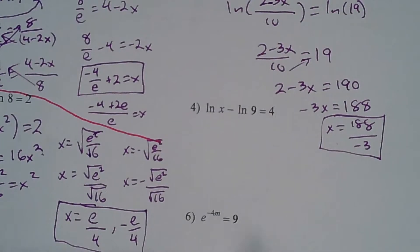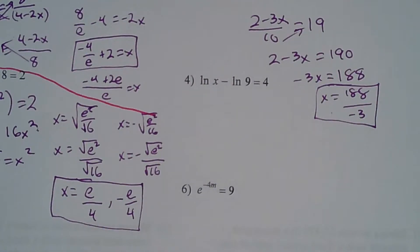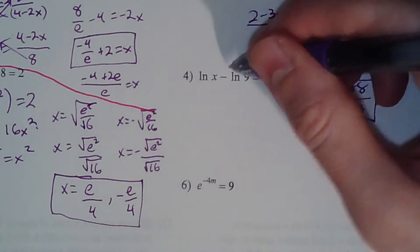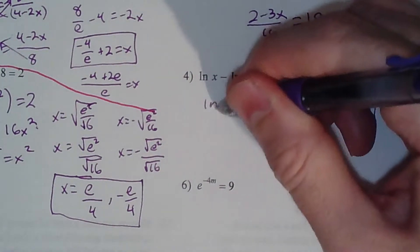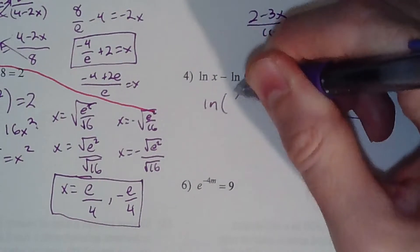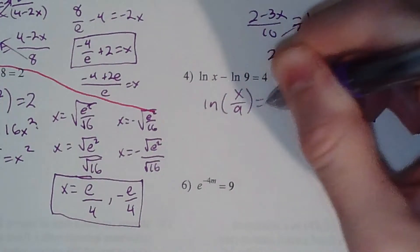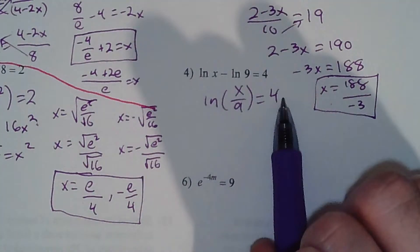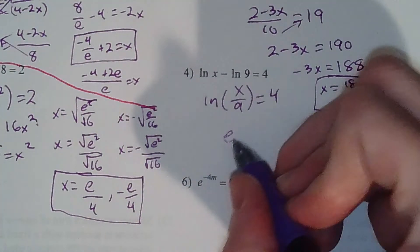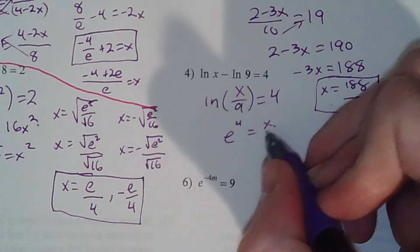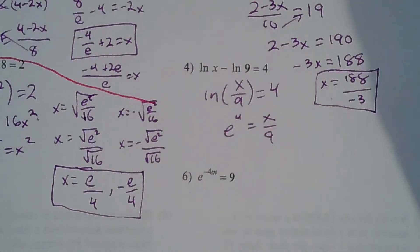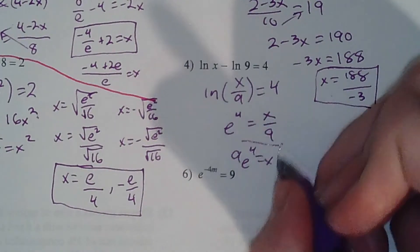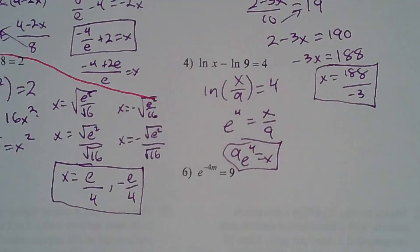Problem number 4: the minus sign means division, so LN of x over 9 equals 4. Use our log loop — e to the 4th power is the inside. E to the 4th equals x over 9. Do our little half multiply: 9e to the 4 equals x. That's it.